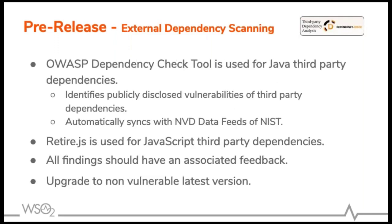OWASP Dependency Check is used for scanning Java third party libraries. This tool will check the National Vulnerability Database (NVD) for known security vulnerabilities. In addition, RetireJS is used for scanning JavaScript third party libraries. Similar to static and dynamic scanning, product teams should upgrade to non-vulnerable versions of third party dependency libraries, or provide justifications on why the finding is not applicable or a false positive, before moving ahead with the product release.